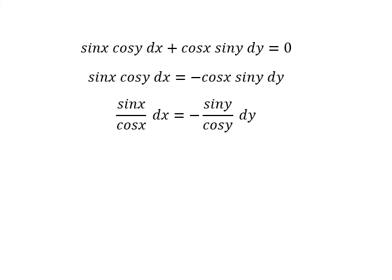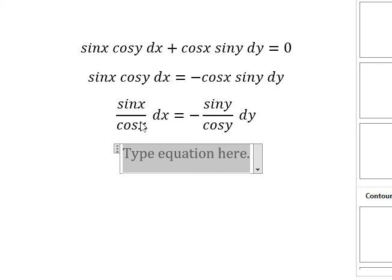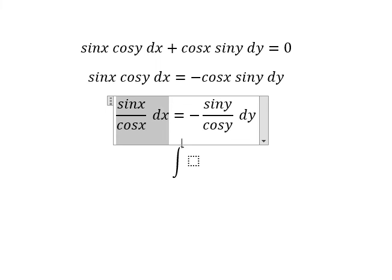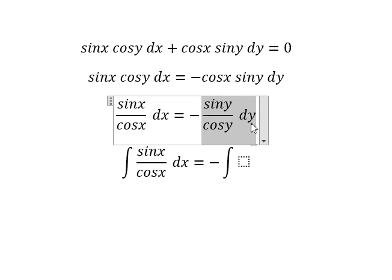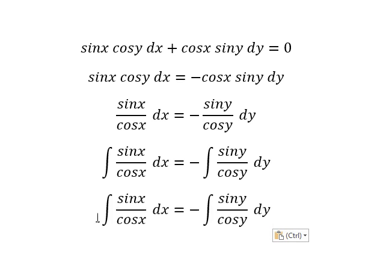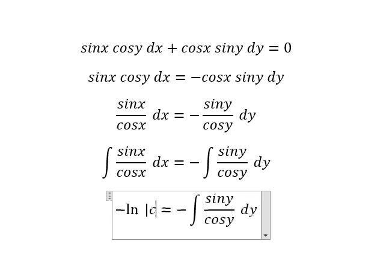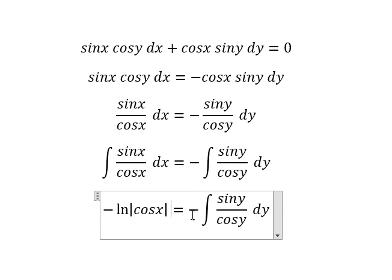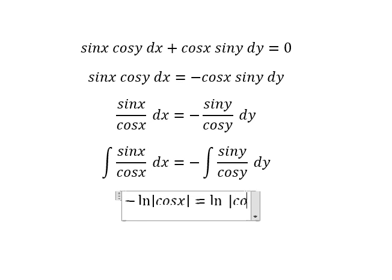Next, we put the integration for both sides. So the integration of this one: we have negative ln of the absolute value of cos x, with a negative, and we have ln of the absolute value of cos y.